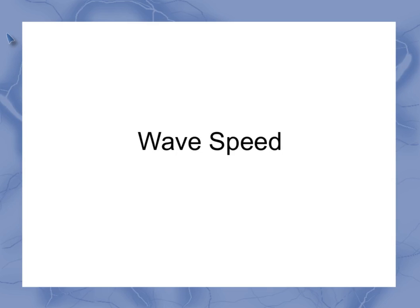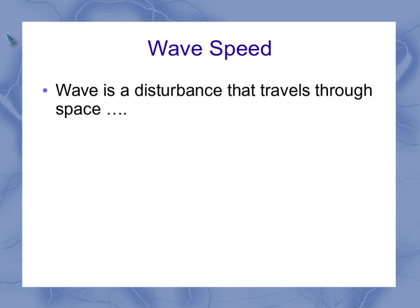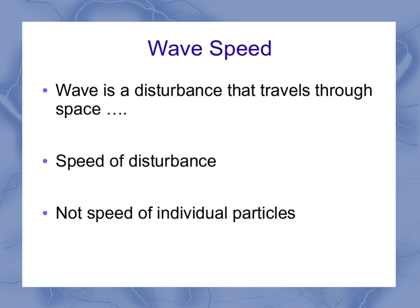Now we're going to look at wave speed. To understand wave speed, we have to remember that a wave is a disturbance that travels through space. So the wave speed is the speed of the disturbance, and this is not the same as the speed of the individual particles.